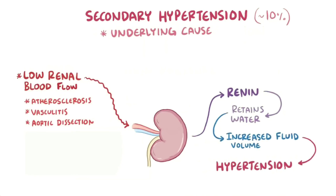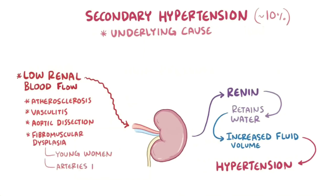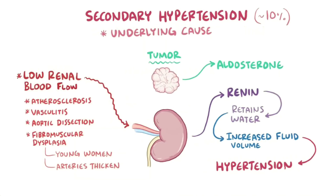Other diseases can also cause secondary hypertension. Fibromuscular dysplasia, which affects young women, can cause the walls of large and medium-sized arteries to thicken; if it involves the renal artery, it triggers more renin release. Another example is a tumor that produces excess aldosterone, which similarly leads to fluid retention.